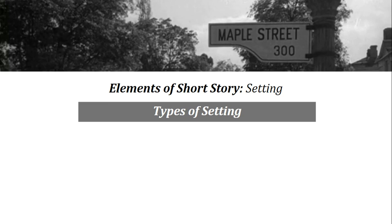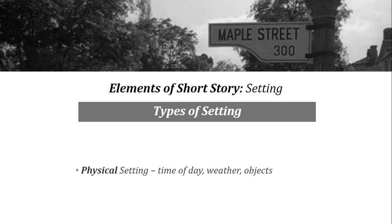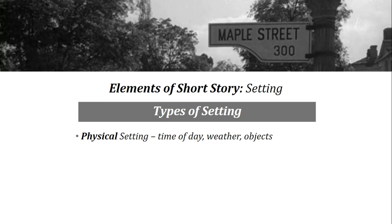A common mistake when thinking about setting is that it's only made up of the buildings or the nature that is in that part of a story. These can be a part of any story's setting, but there are several other types as well. In fact, there are four types. The first one is physical setting, which can include the time of day the story takes place, the weather that is happening in the story, or objects that are found in the setting.